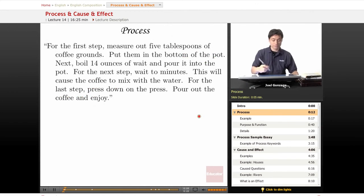Here's an example of a process. For the first step, measure out five tablespoons of coffee grounds and put them in the bottom of the pot.